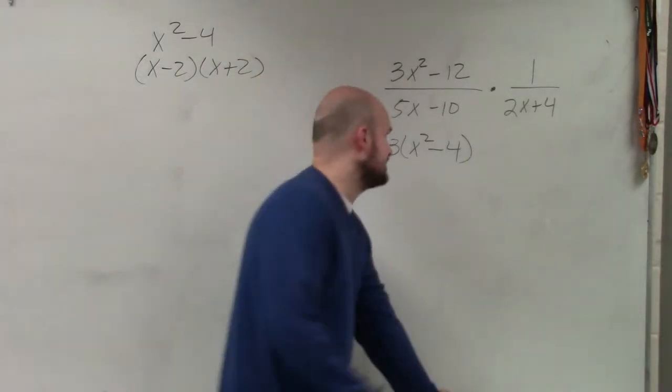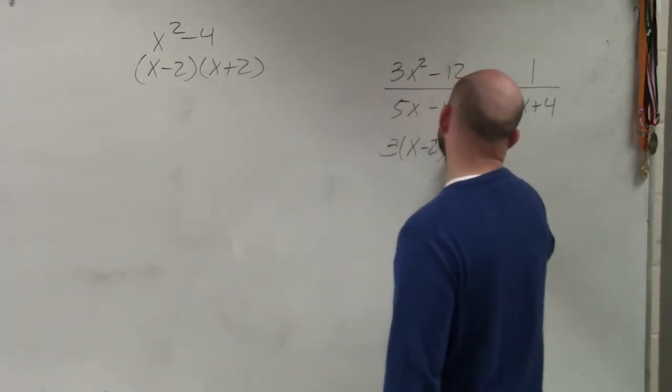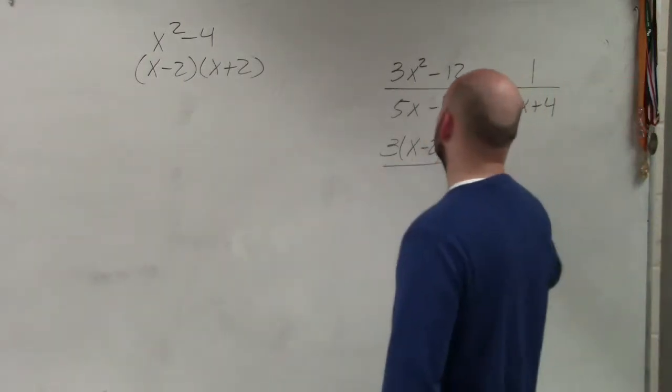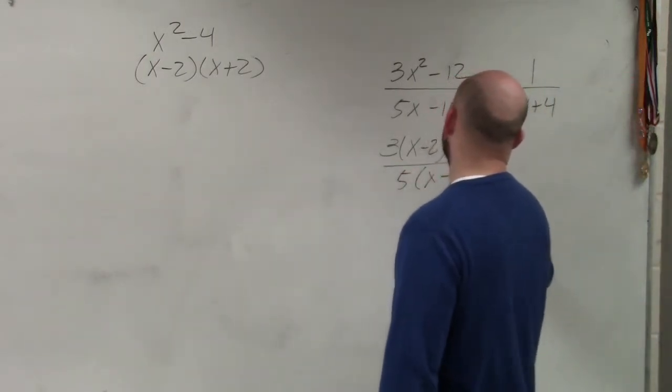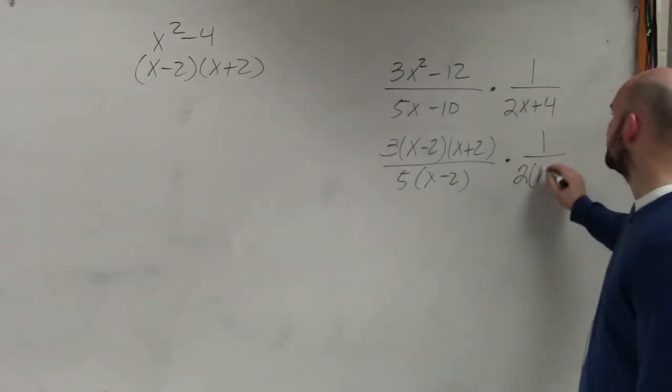So I'm actually going to write that in there. Instead of x squared minus 4, I'm going to write this as x minus 2 times x plus 2. Here, I'm going to factor out a 5, x minus 2, times 1 over, here, I can factor out a 2, which would be 2 times x plus 2.